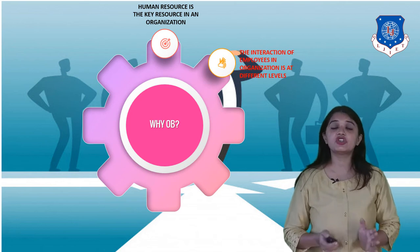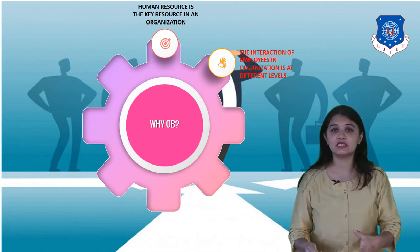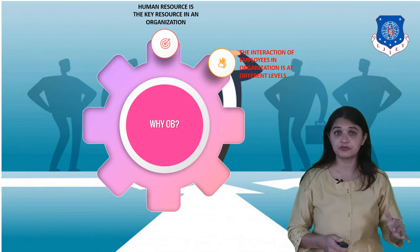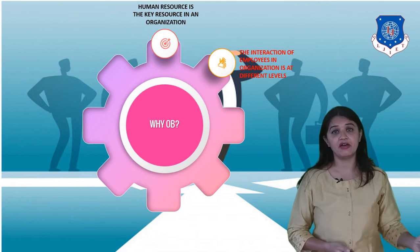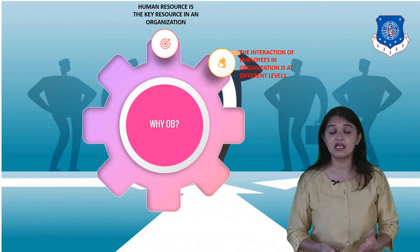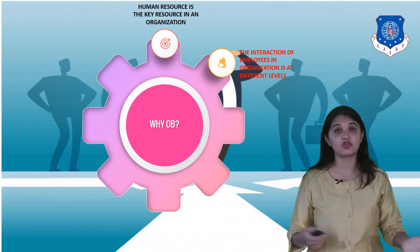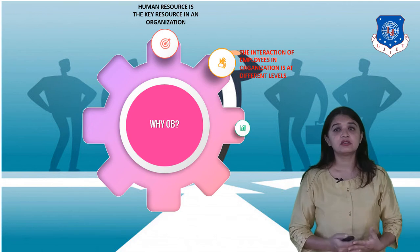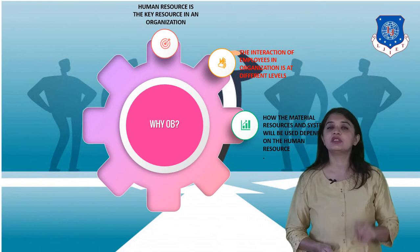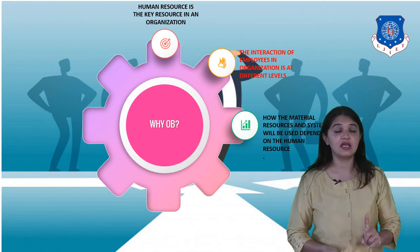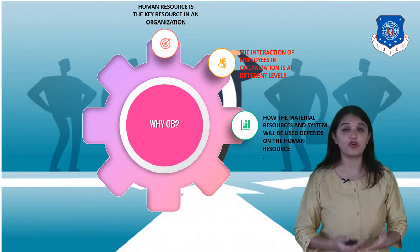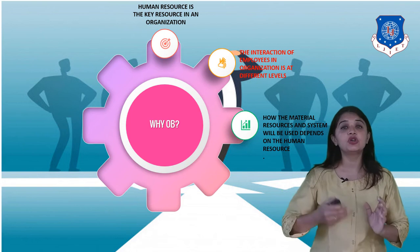Secondly, the interaction of human beings with each other in the organization occurs at different levels. An employee will have to interact with the peer group, with subordinates if they have any, or with superiors. They also have one more level of interaction — with the outside world, which includes clients, vendors, or suppliers. Thirdly, how the other resources will be used depends on the human resource, and that is why we say human resource is the key resource.